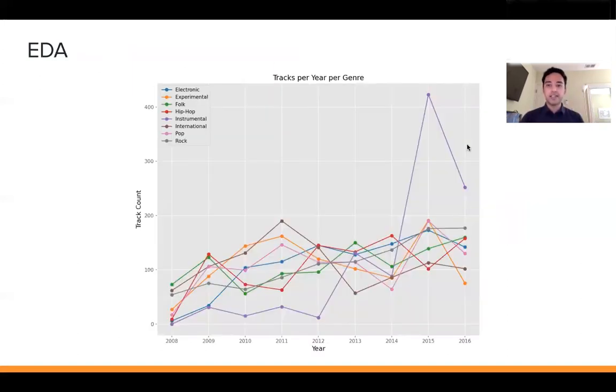In my EDA I'd say the biggest takeaway that I was able to gain or the biggest insight I was able to gain from the metadata was looking at the tracks per year per genre. What this graph is depicting, it's a little bit noisy but the main point is that you can see that across all of the years most of the genres have a similar number of songs from each year ranging from 2008 to 2016. Barring the bit of an outlier where Instrumental had a lot of its songs pulled particularly from 2015.